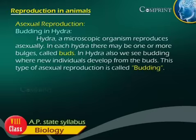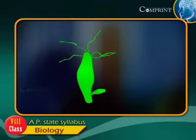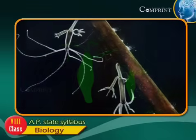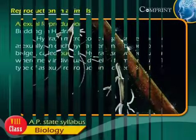Hydra, a microscopic organism, reproduces asexually. In each hydra, there may be one or more bulges called buds. In hydra, we see budding where new individuals develop from the buds. This type of asexual reproduction is called budding.